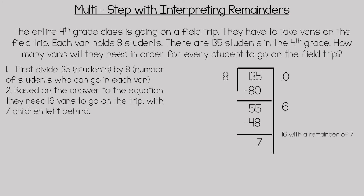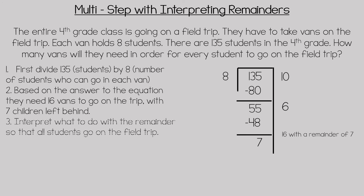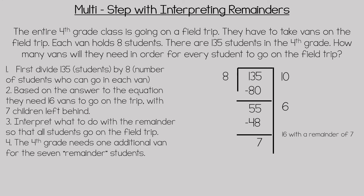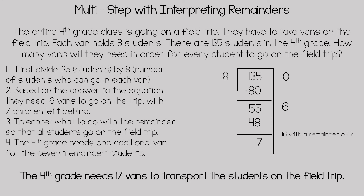This is where we interpret what that seven means. Are we leaving the seven children at school, or are we taking them with us? We need to make sure we have enough vans for each student to go on the field trip. So the fourth grade needs to add one additional van for the seven remainder students, meaning the fourth grade needs 17 vans to transport all students on the field trip.